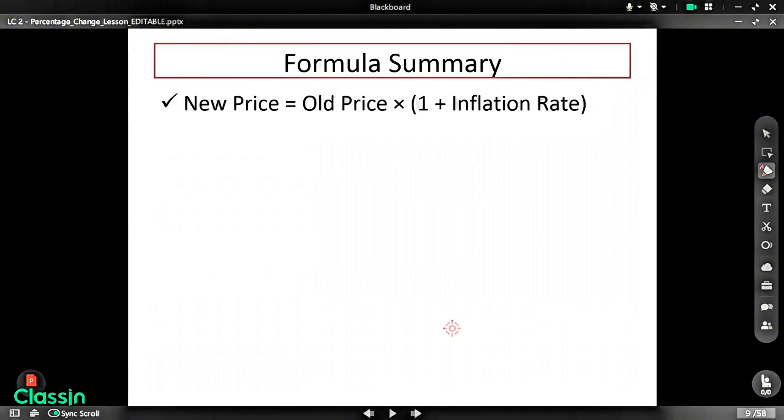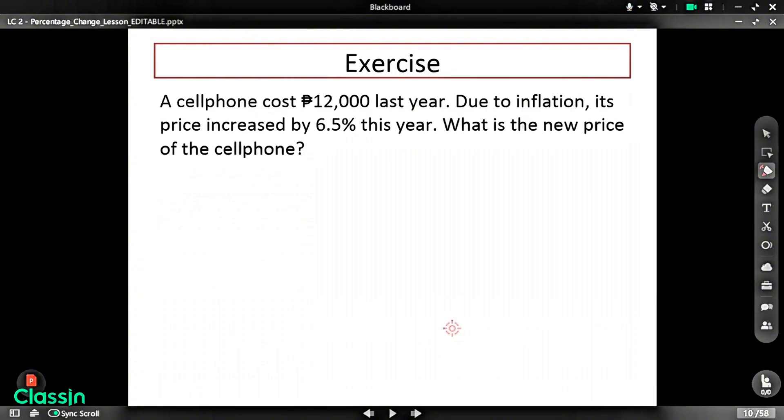Now let's have a summary of the formula that we use in the first lesson. So in getting the new price, in accordance with the inflation, we need to multiply the old price by the sum of 1 plus the given inflation rate a year. Now let's put what we have learned into the word problem or into a real-life situation.